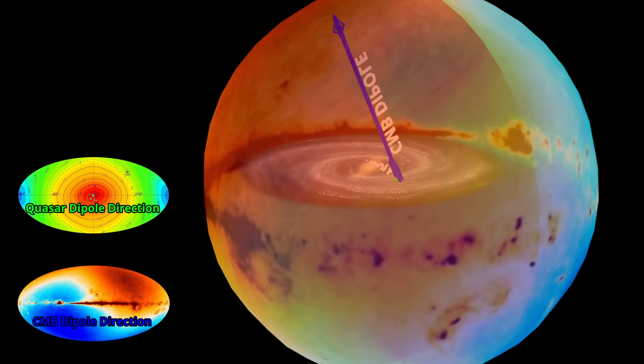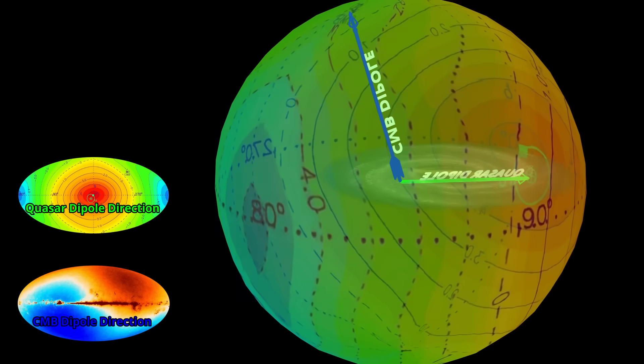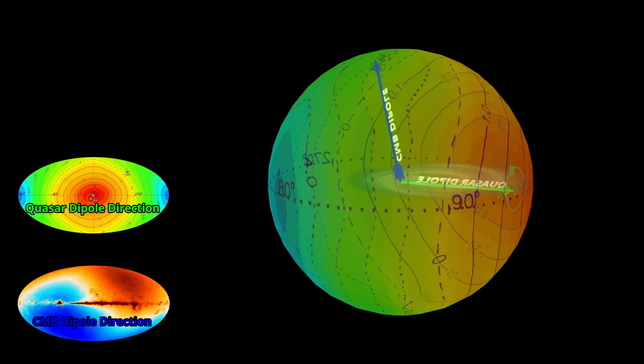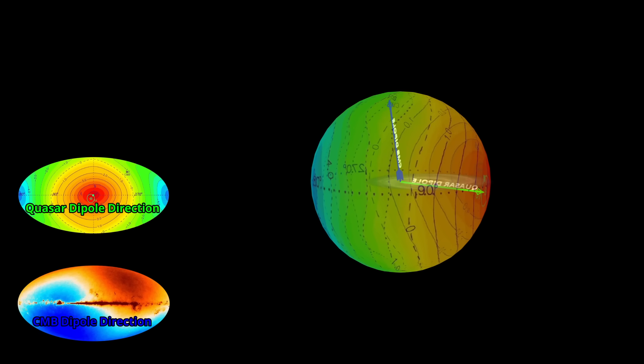From this perspective, the CMB dipole could be interpreted as a real motion through that field. The quasar dipole, however, would not mark a velocity but a structural difference. Perhaps we are simply closer to the filament network on one side of the sky than on the other.